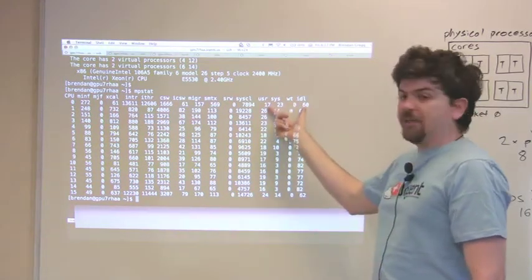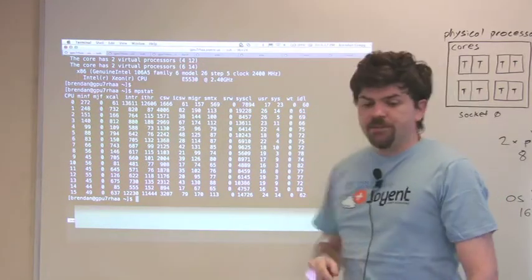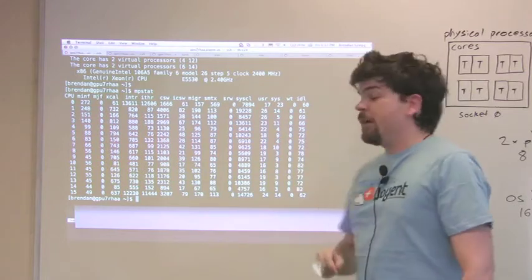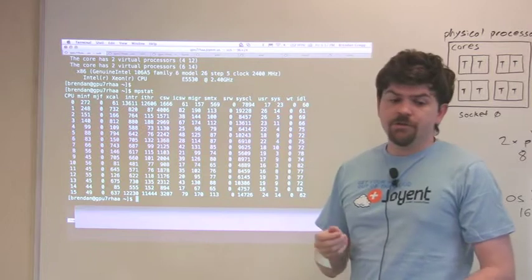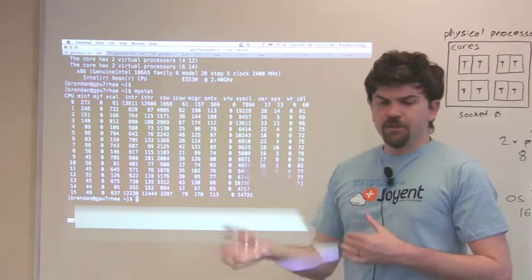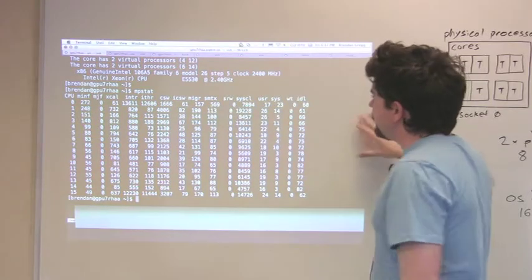These columns will add to 100% per CPU. This column here, wt is for percent wait IO. That's been hardwired to zero on Solaris 10, because as a metric, it was confusing, especially on multiprocessor systems, and it's now being deprecated.